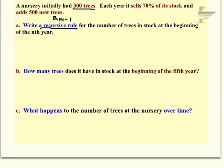So a couple things you note about the problem. It initially had 300 trees. So I could say a sub 0 equals 300. You could also call that a sub 1 if you want, like for the first year, and that's completely up to you. The math will work out to be the same.